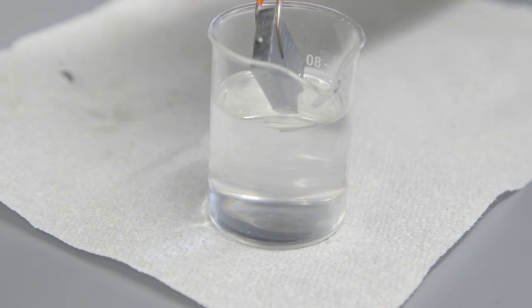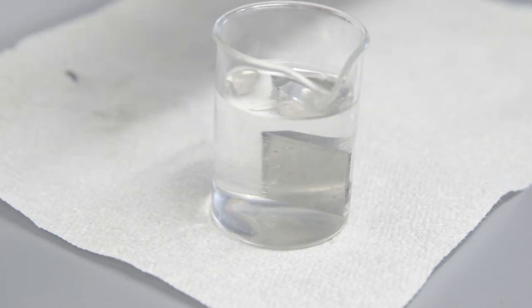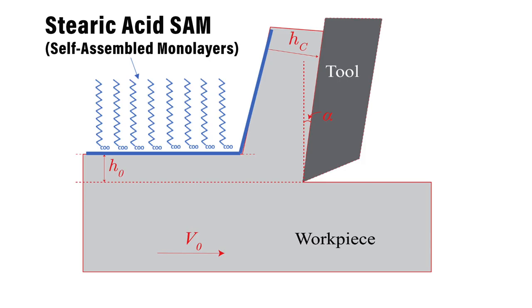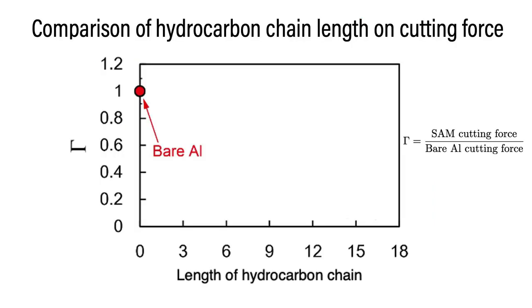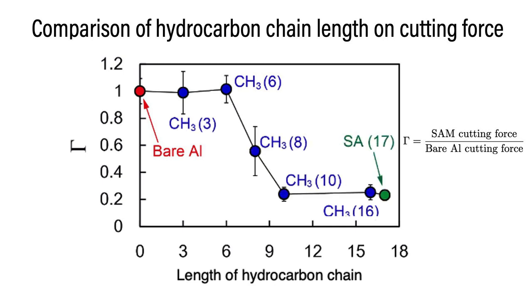What we did was we deposited a monolayer. There's a well-established protocol to do this. We varied the chain length of the molecule in the different experiments. What we found was that only molecules which had a chain length greater than six, so seven or greater, only they would have the effect.